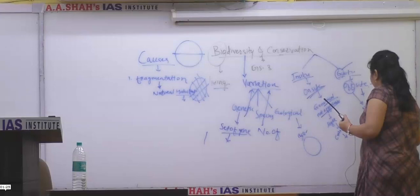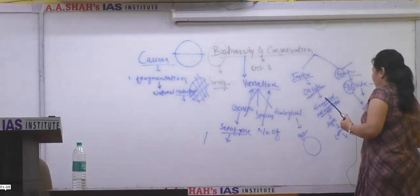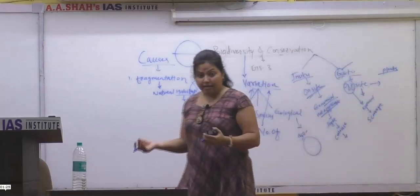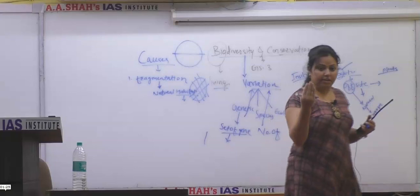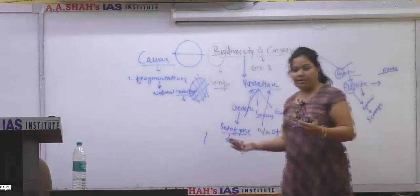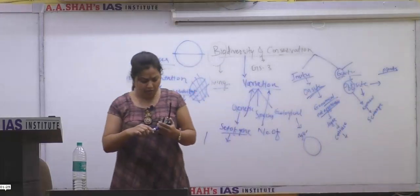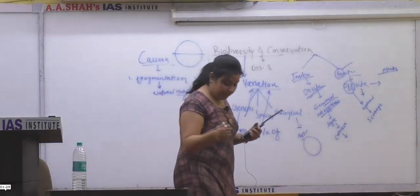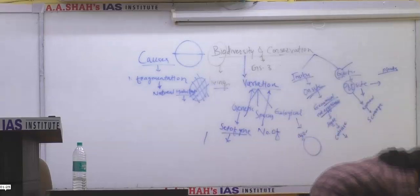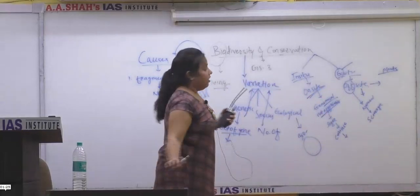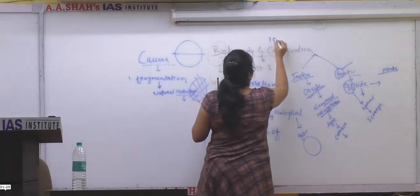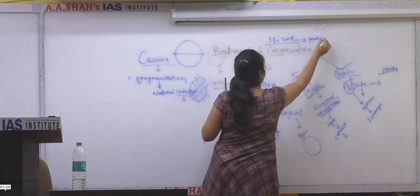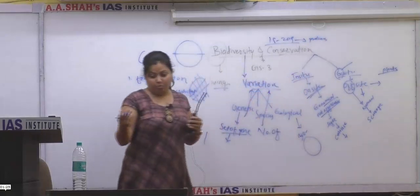The government started scavenger conservation programs. Earlier we had tiger and lion programs. Last year UPSC asked a question about which national park the Asiatic lion was transferred to. UPSC asks various questions from the environment section — environment is a very important part of both prelims and mains, with approximately 15 to 20 questions every year in prelims.